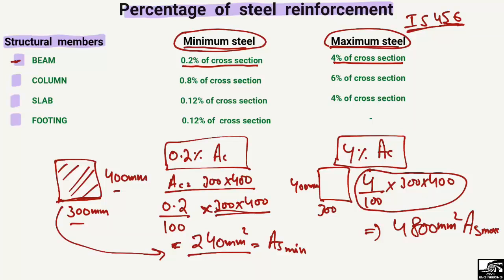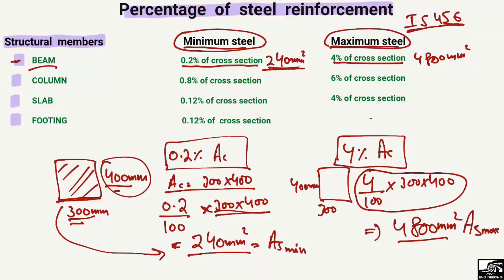So for a beam cross-section of 300 mm width and 400 mm depth, the minimum reinforcement is 240 mm² and the maximum is 4800 mm². If the width or depth changes, these values will change accordingly since they depend on the cross-section area.